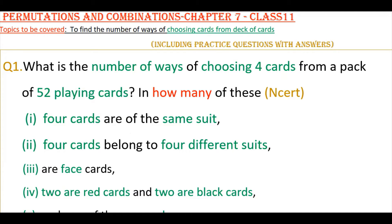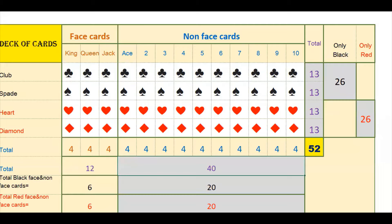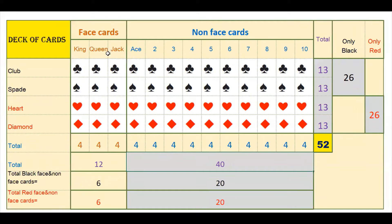Before solving, we need to know about the composition of the deck. There are total 52 cards. Out of these, there are 13 club cards, 13 spade cards, 13 heart cards, and 13 diamond cards — so 13 into 4 equals 52. Out of these 52 cards, there are 26 black cards: club and spade are black color.